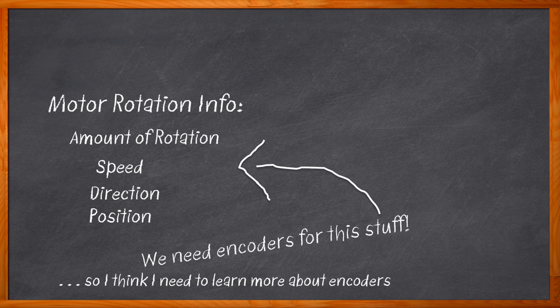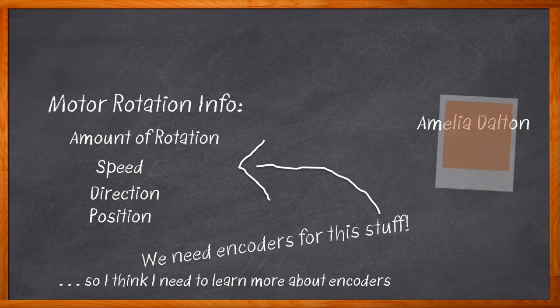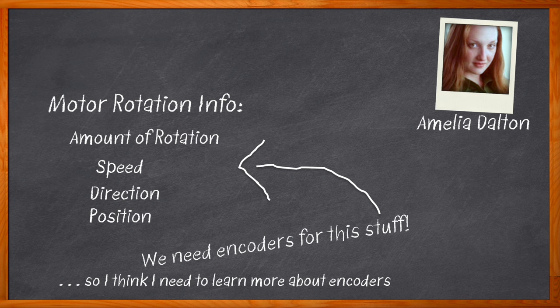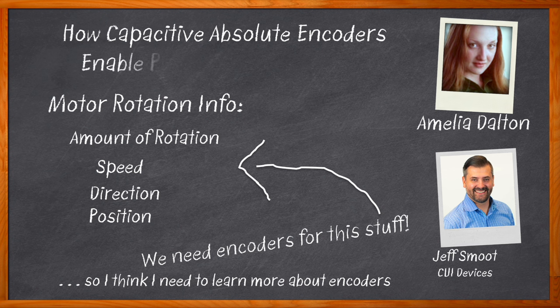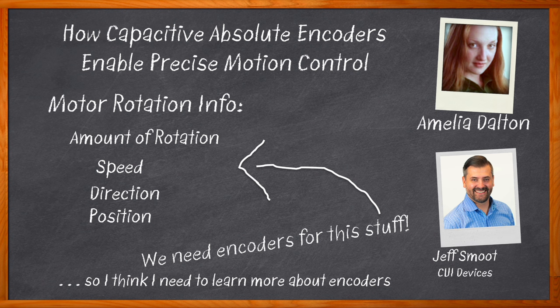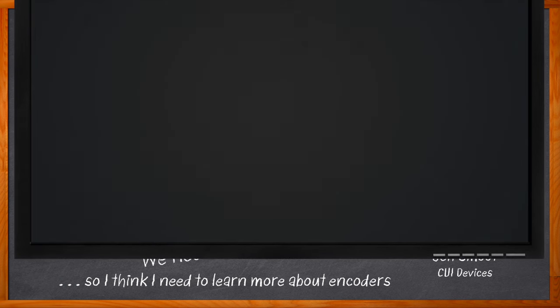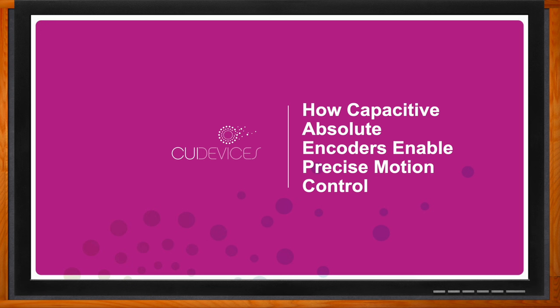How do mechanical encoders compare with magnetic or optical encoders? And what is an absolute capacitive encoder? Well, we're here to answer all of those questions and more. Hi, I'm Amelia Dalton, host of Chalk Talk. Encoders are a great way to provide motion feedback and capture vital rotary motion information. In this episode of Chalk Talk, Jeff Smoot from CUI Devices and I examine the benefits and drawbacks of different encoder solutions. We also explore the unique system advantages of absolute encoders and how you can get started using a CUI Devices absolute encoder in your next design.